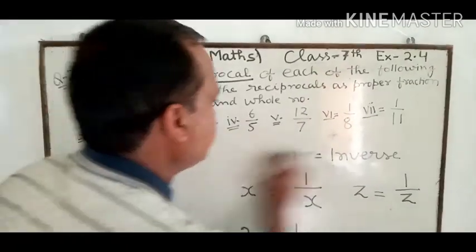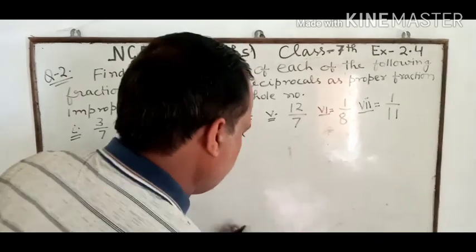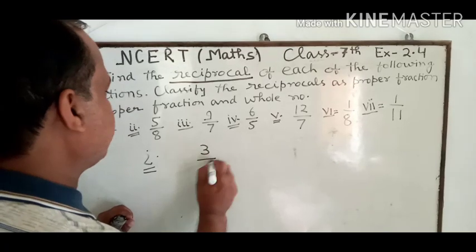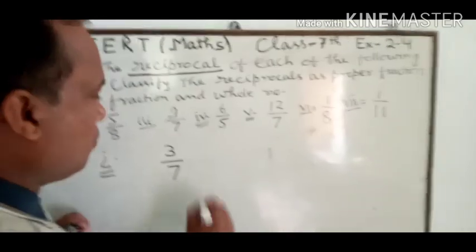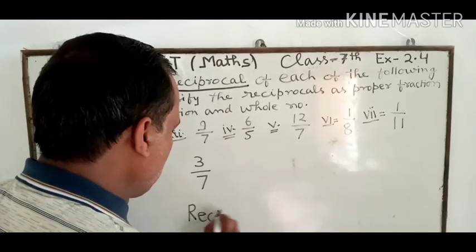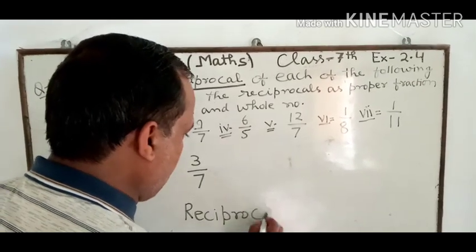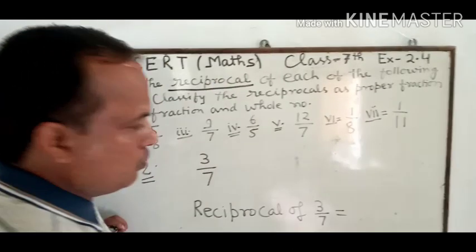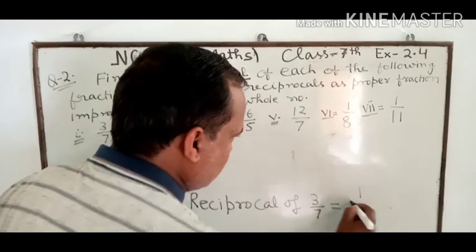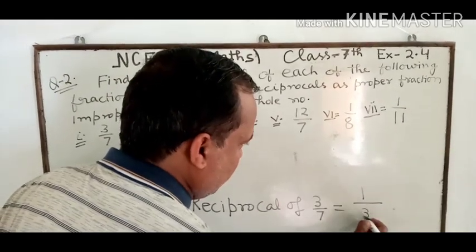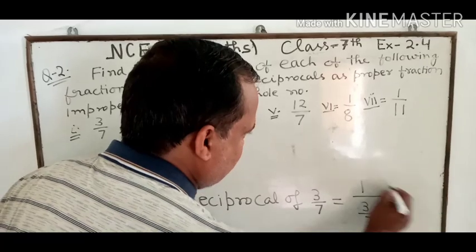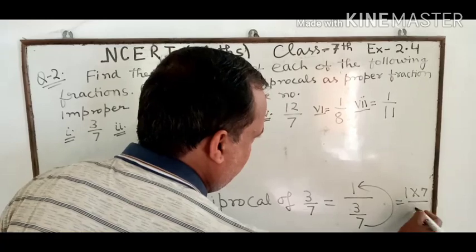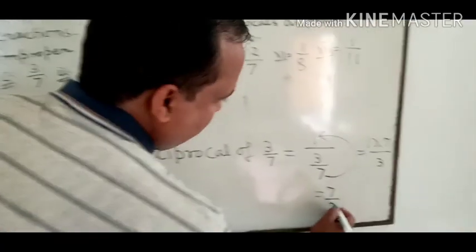First part is 3 upon 7. Reciprocal of 3/7 equals 1 upon (3 upon 7). अब यह 7 ऊपर shift कर जाएगा, तो हो जाएगा 1 multiply 7 upon 3, that is 7 upon 3.